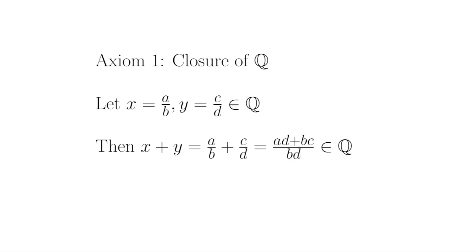Axiom 1, Closure. Let's take two rational numbers x, which we will express as a over b, and y, which we will express as c over d, where b and d are, of course, non-zero. When we make a common denominator and add them together, we get x + y equals a/b + c/d, which equals (ad + bc)/bd, which is a rational number since it is the ratio of integers and has a non-zero denominator. So we do have closure.